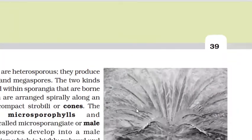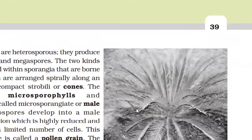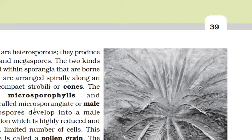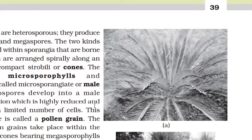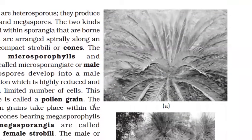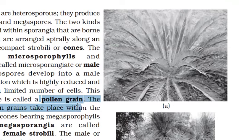Gymnosperms are heterosporous — they produce two types of spores: male microspores and female megaspores. These are produced in sporangia borne on sporophylls, which are spirally arranged along an axis to form compact strobili and cones. Microspores develop into the male gametophyte, also called pollen grains, within the microsporangia.